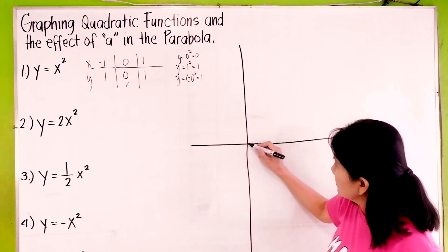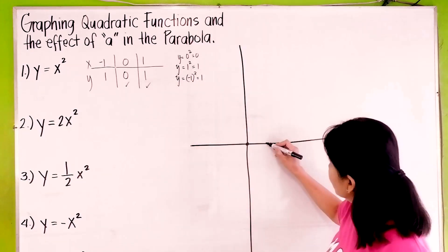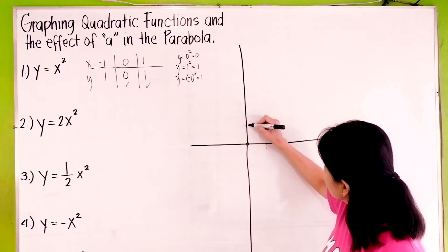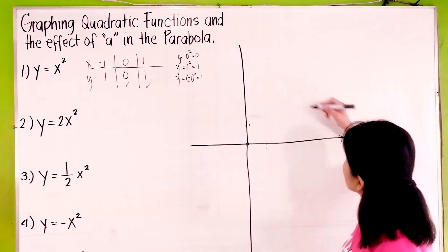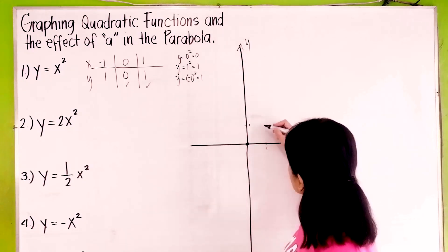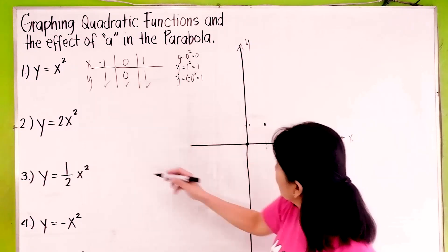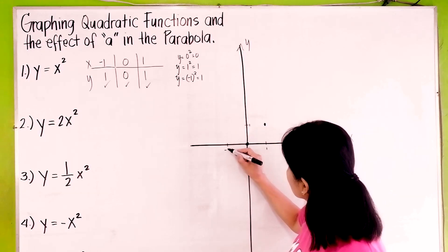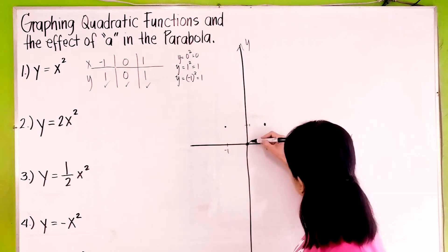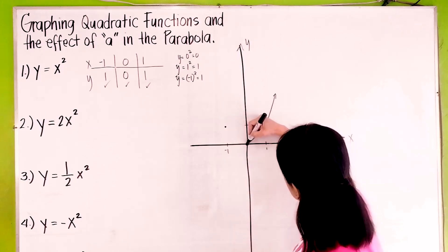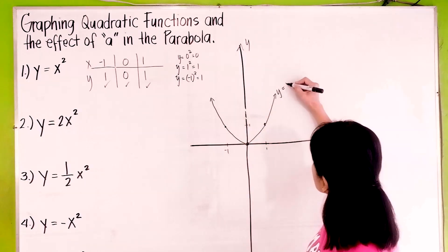The point (0, 0) is here. Then (1, 1) — if this is 1 on the x-axis and 1 on the y-axis, that point is here. Then negative 1, 1 — this is negative 1 and y is 1 will be here. If you connect these points, you'll have the parabola: y equals x squared.